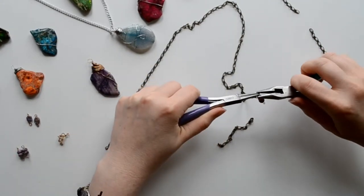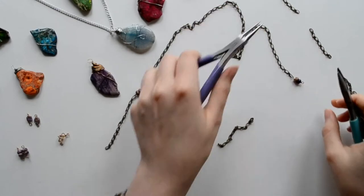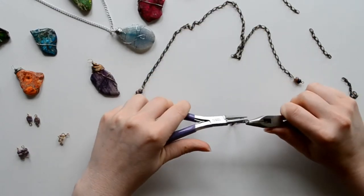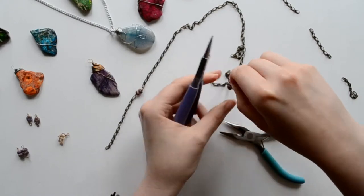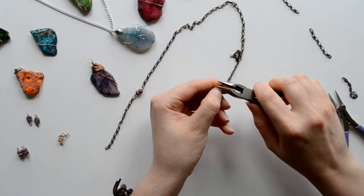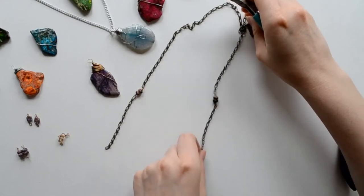Now I did not have a clasp on mine because I made my chain extra long. But if you feel like you want a clasp, go right ahead. Just divide the 17-inch chain in half and attach it.